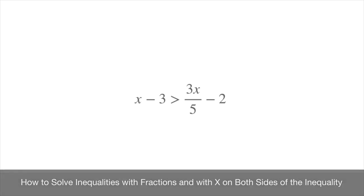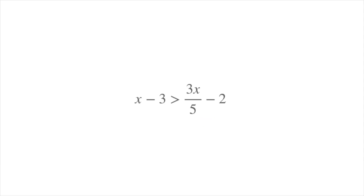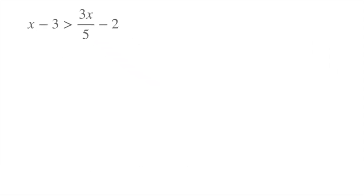Say we have to solve the inequality we see here — that's x minus 3 greater than 3x over 5 minus 2. To get us started, let me move this to the side, like so.